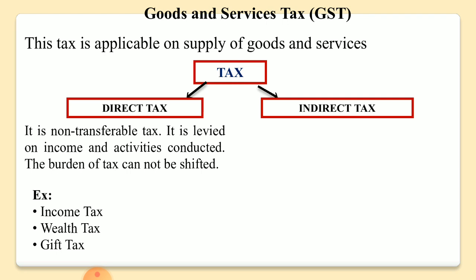Wealth tax and gift tax were levied earlier, but now these taxes have been removed. Now we have only one tax under direct tax, that is income tax.